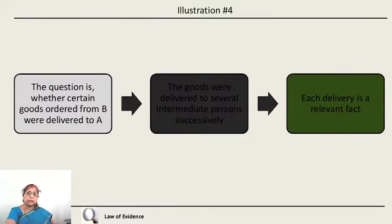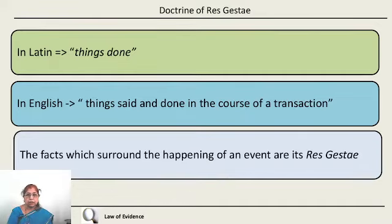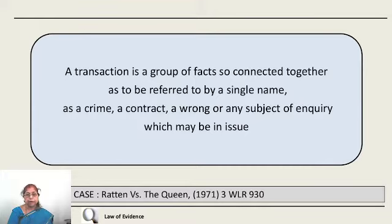Res Gestae means in Latin 'things done,' or in English, 'things done or said in the course of a transaction.' That means all those facts which are surrounding the happening of a particular event or transaction are called its Res Gestae. Though Section 6 does not use the phrase 'Res Gestae' at all — it only says 'facts forming part of the same transaction' — we relate it to the English doctrine of Res Gestae.